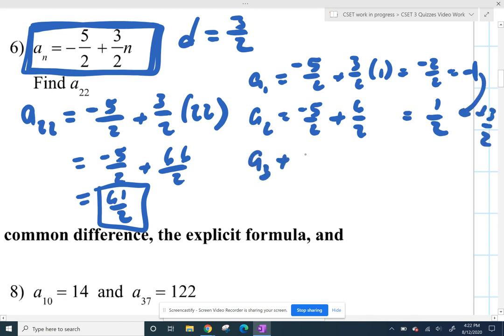But if you don't believe that that pattern is going to keep going, you plug in a 3. So now you're taking negative 5 halves and you're adding 3 halves, 3 times. So negative 5 plus 9 is 4 halves.